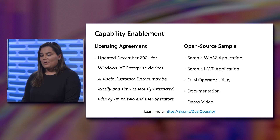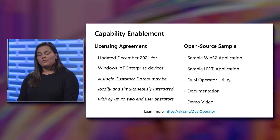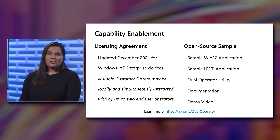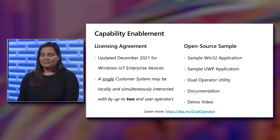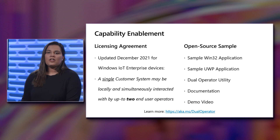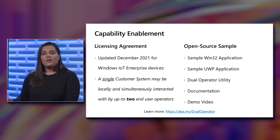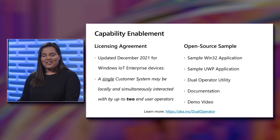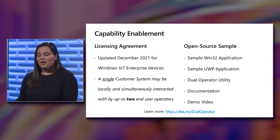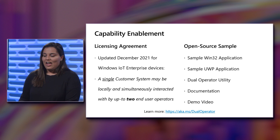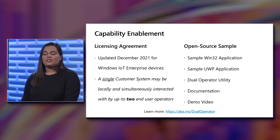This open source sample consists of about three parts: the first is a sample Win32 application, the second is a UWP application, and the third is the dual operator utility itself, which orchestrates the whole capability. We also have supplemental documentation showcasing how you can set this scenario up for your solution, as well as a demo video showcasing this capability in action. You can learn more and check out this open source sample at aka.ms/dualoperator.